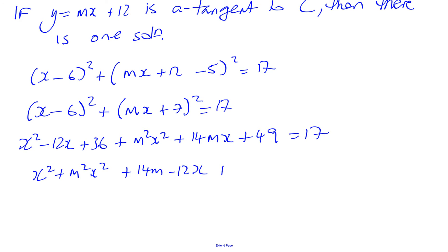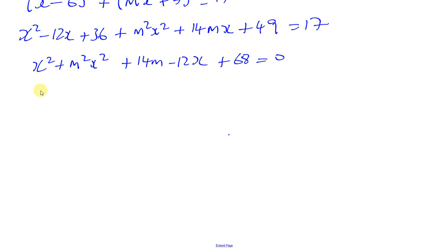So let's see what happens next. Let's write the x² term. This is basically x² times (1 + m²). So (1 + m²)x². That's the x² term. The x term is (14m - 12)x plus 68 = 0.